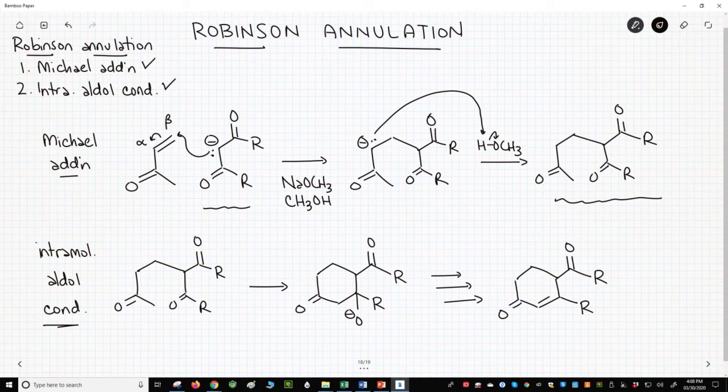We're still in base, and we can deprotonate one of these alpha carbons to make an enolate. This enolate is one, two, three, four, five, six atoms away from a potential carbonyl electrophile.